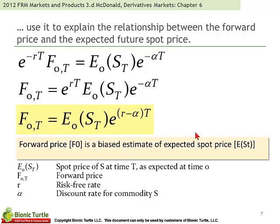We're asked to explain the relationship between the forward price and the expected future spot price. Here is McDonald's variation, which is potentially confusing because we've gone from the cost of carry model — which represents the forward price as a function of the spot price and any costs to carry the commodity — as opposed to this formula here. This is not growing the spot price; this is the expected future spot price.